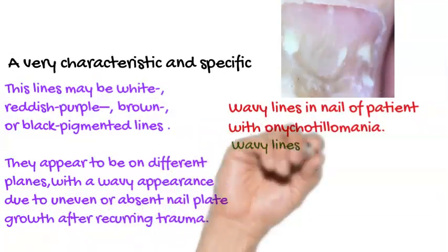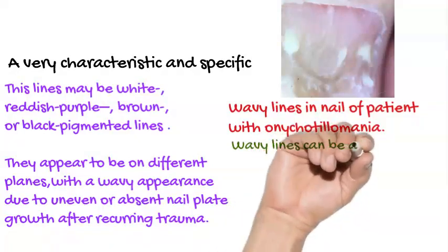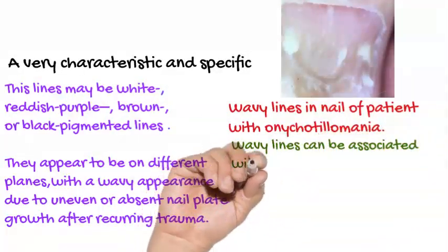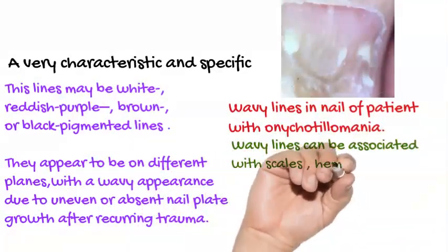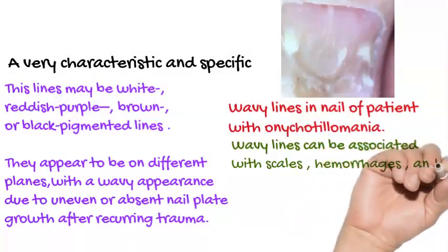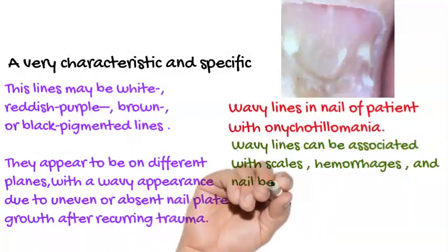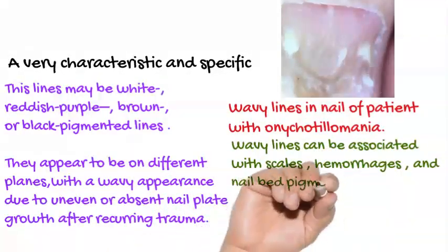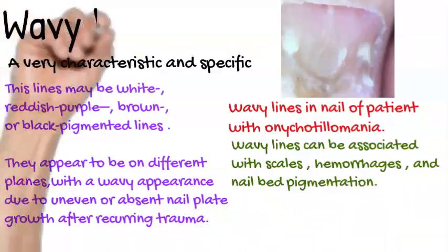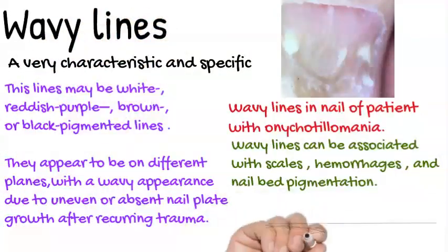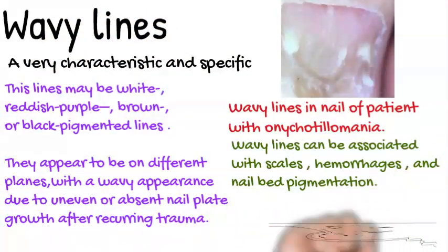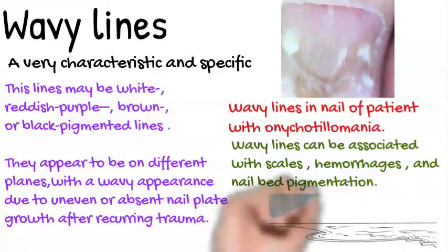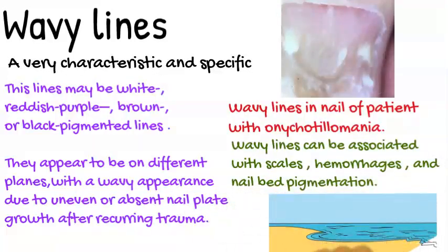These wavy lines can be associated with scales, hemorrhages, and nail bed pigmentation — or they may appear as the only criteria. Wavy lines are a very characteristic and specific criterion of onychotillomania.